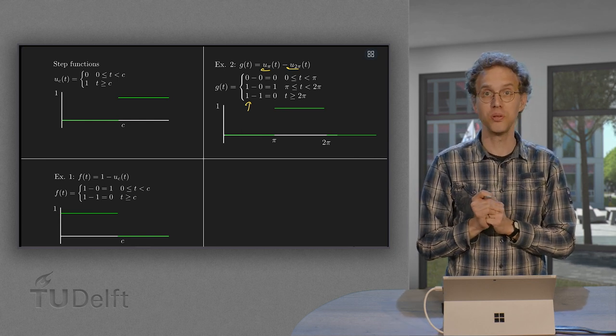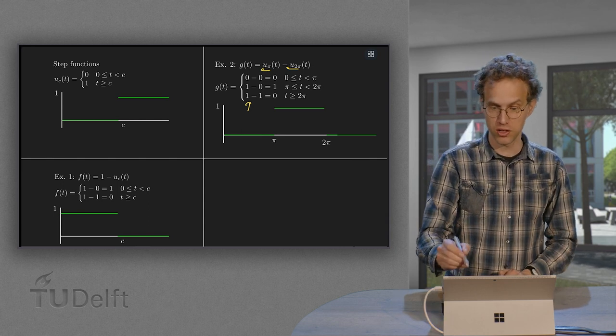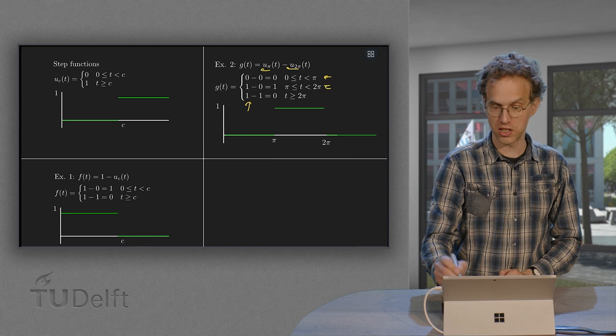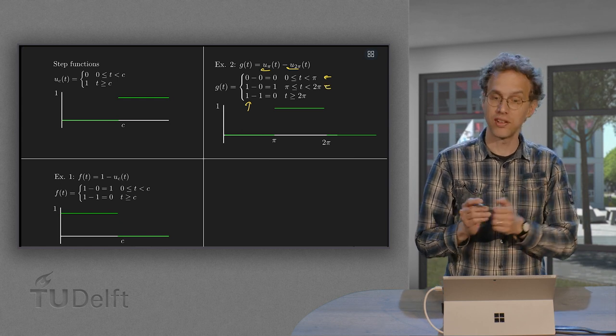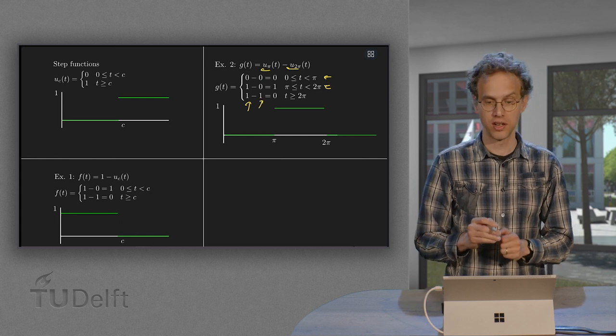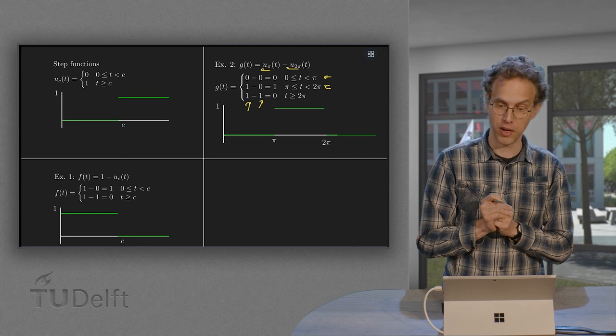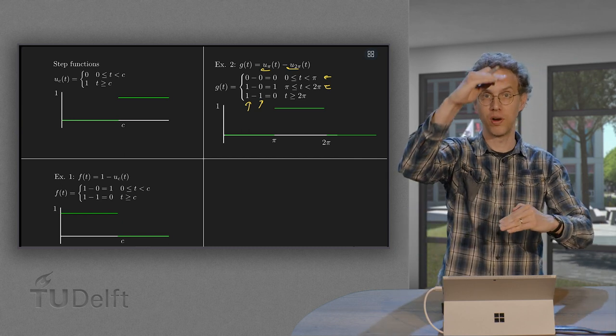What does the second function do? Well, it is 0 up to 2 pi. So on this part and this part it's still 0. And then we get the minus 1. Because we have minus u 2 pi. We get this. So we get 0 minus 0 equals 0. 1 minus 0 equals 1. 1 minus 1 equals 0. So 0, 1, 0.